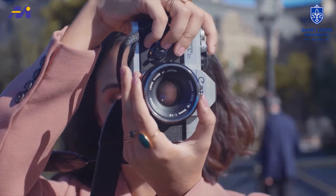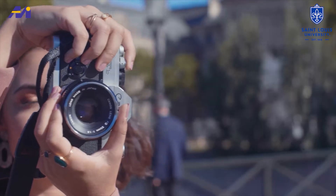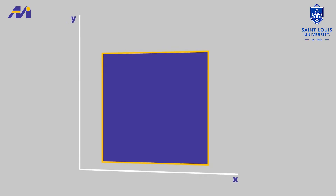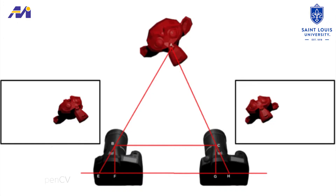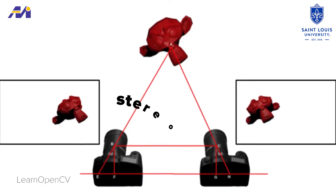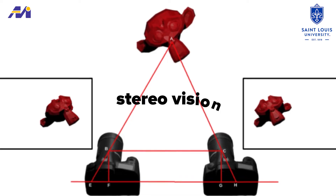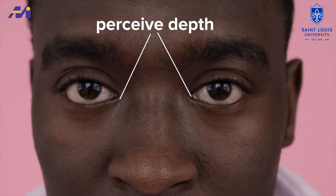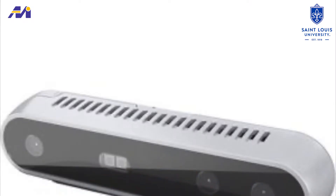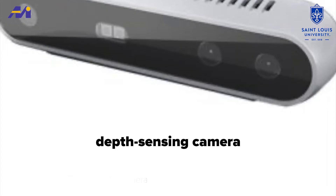An important limitation of a camera is that when taking a photo, the 3D structure of the scene is lost in the resulting 2D image. The solution is to use stereo vision, where information from two cameras is combined to estimate the 3D structure of the scene. This is how our eyes perceive depth. The camera in our vision kit is a depth-sensing camera.